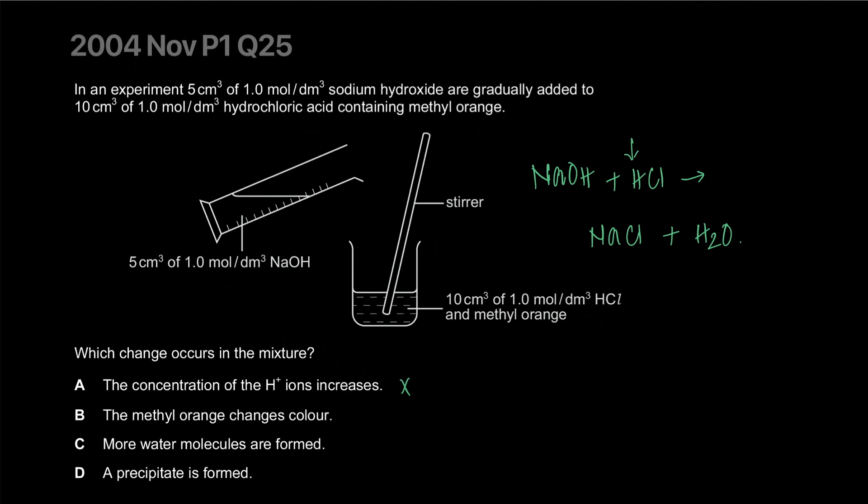The concentration of hydrogen ion will decrease as more alkali is added. The methyl orange will only change color if it crosses neutralization and becomes alkaline. But you're adding less sodium hydroxide than needed. To reach neutralization, you'll need at least 10 cm³. The methyl orange will not change color. More water molecules are formed. That's true. The correct answer is C.